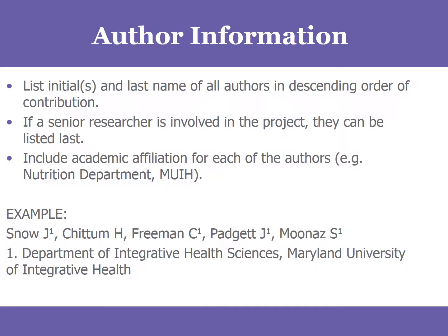Then comes the author information. Your authorship is going to be in order of involvement. Your first author is always going to be the author who spearheads the project and takes the primary role in making it happen, followed in descending order of involvement. The only exception is that sometimes there's a more senior researcher providing oversight and mentoring on the project, and they might appear last. In this example, you'll see that there are five authors. Four of them are from the Department of Integrative Health Sciences. The second author should have a superscript indicating their affiliation listed below. At least one author is going to be affiliated with MUIH, but you might have some authors that are outside of MUIH, and they should be listed as well. In the form, there will be a place for the affiliation of each author.